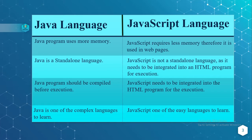Java programs should be compiled before execution, whereas JavaScript needs to be integrated into an HTML program for execution. Java is one of the more complex languages to learn, whereas JavaScript is one of the easier languages to learn.